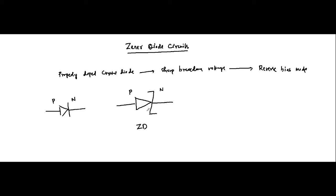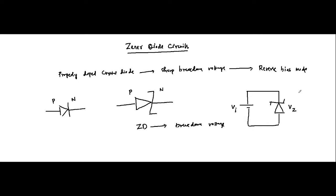And even when it is connected in reverse bias mode, the reverse bias voltage has to cross the breakdown voltage. Whenever it is connected across an input voltage, it is made sure that the reverse bias voltage is greater than the Zener breakdown voltage. Only in that case it behaves as its equivalent circuit, which is the Zener voltage. If it is lesser than the Zener voltage, it behaves as an open circuit — that is the off state of the Zener diode.